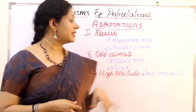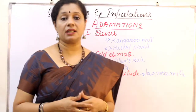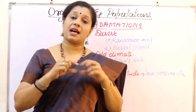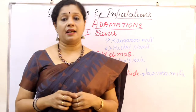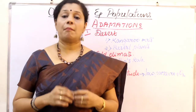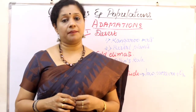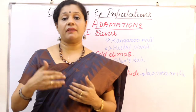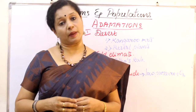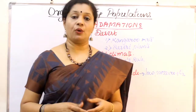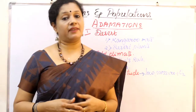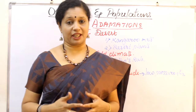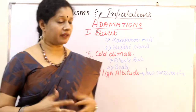Seals found in polar regions have a thick layer of fat under their skin called blubber, which acts as an insulator preventing heat loss from the body. All animals living in colder regions also have thick, long fur over their body.